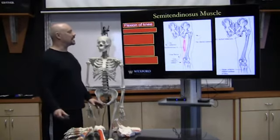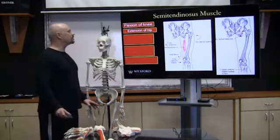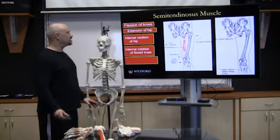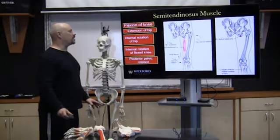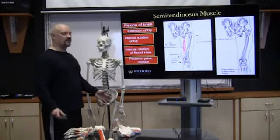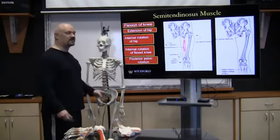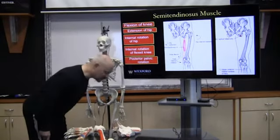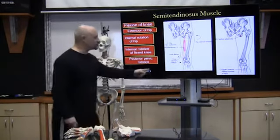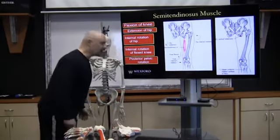The semitendinosus, part of the hamstrings, does flexion of the knee, extension of the hip, internal rotation of the hip, internal rotation of a flexed knee, and posterior pelvic rotation. When the foot is stable and you rotate at the hips and come back up, these hamstrings pull on the pelvis and help extend the trunk.